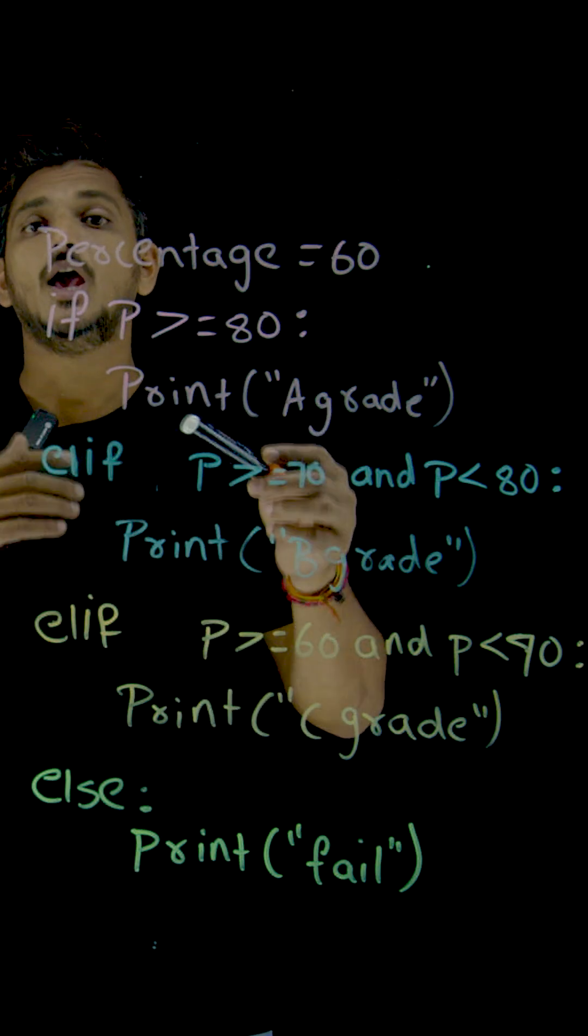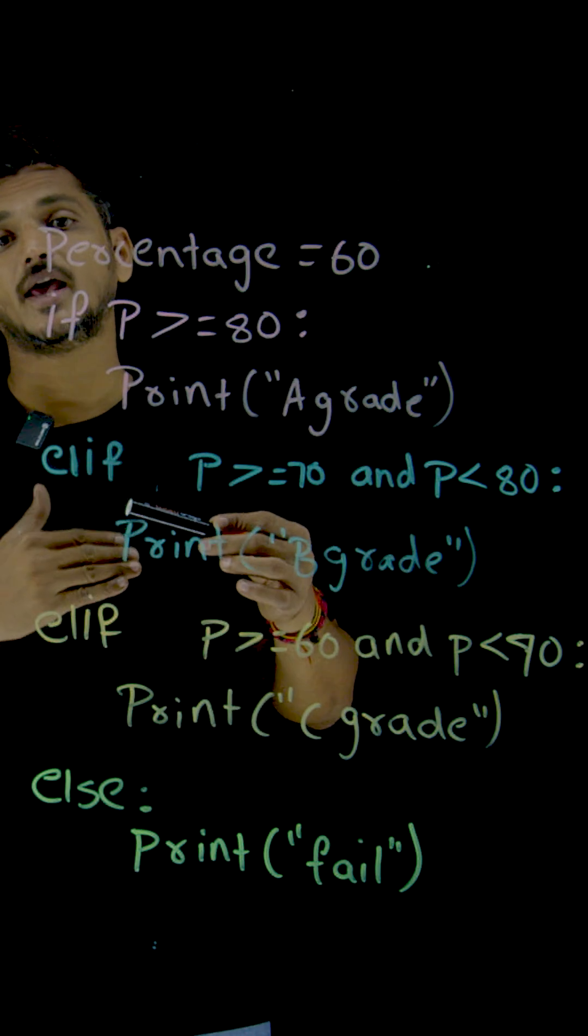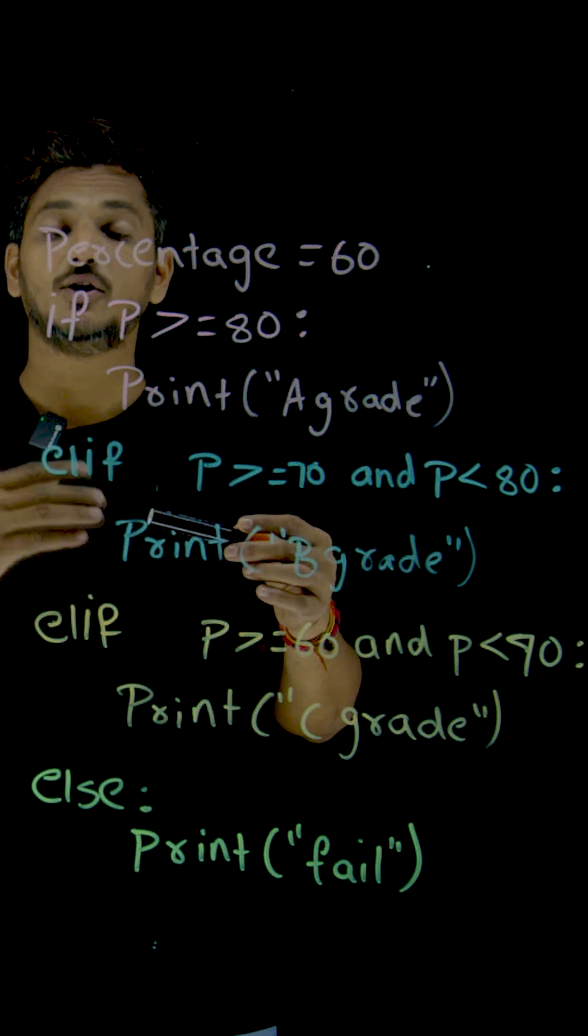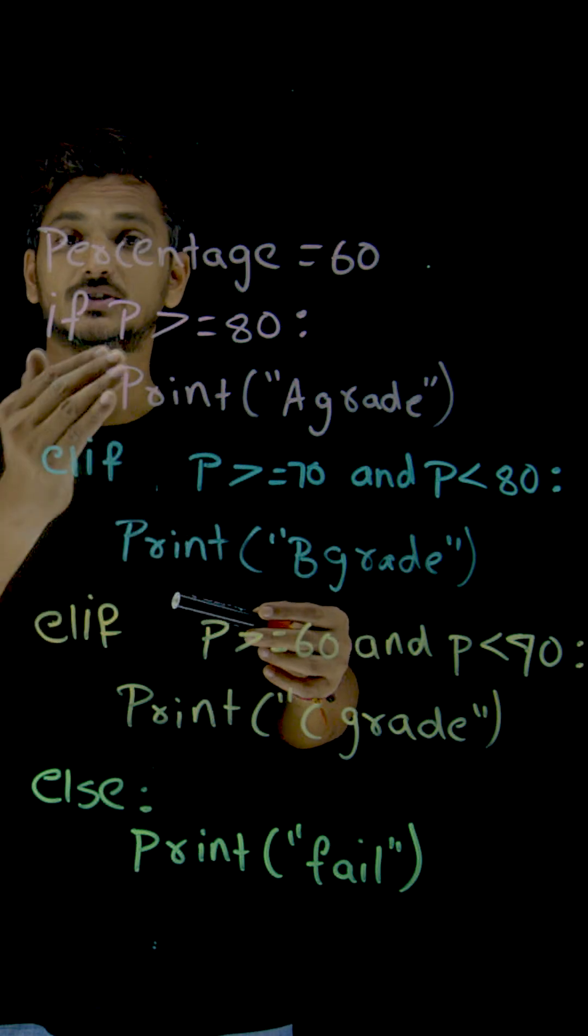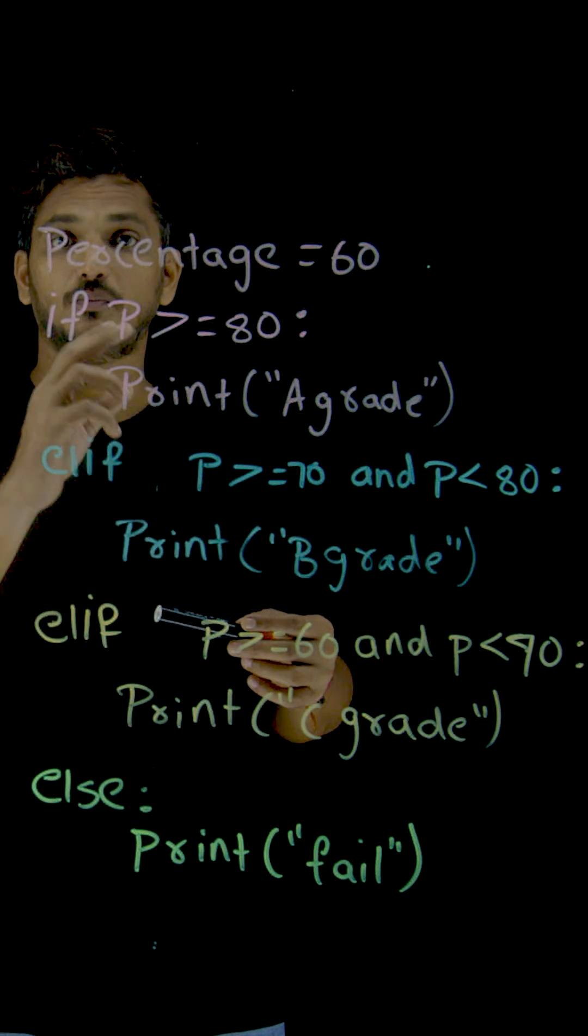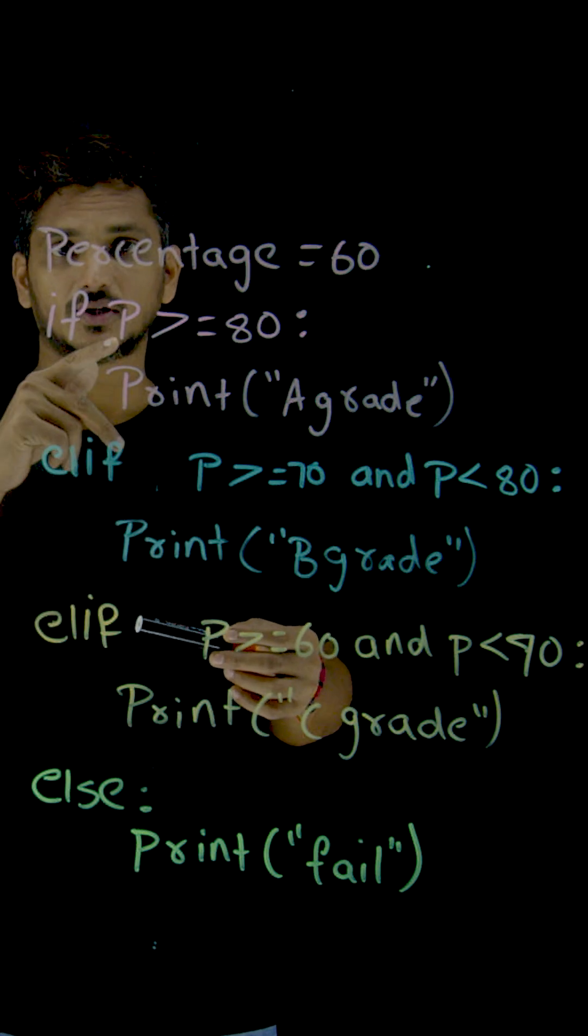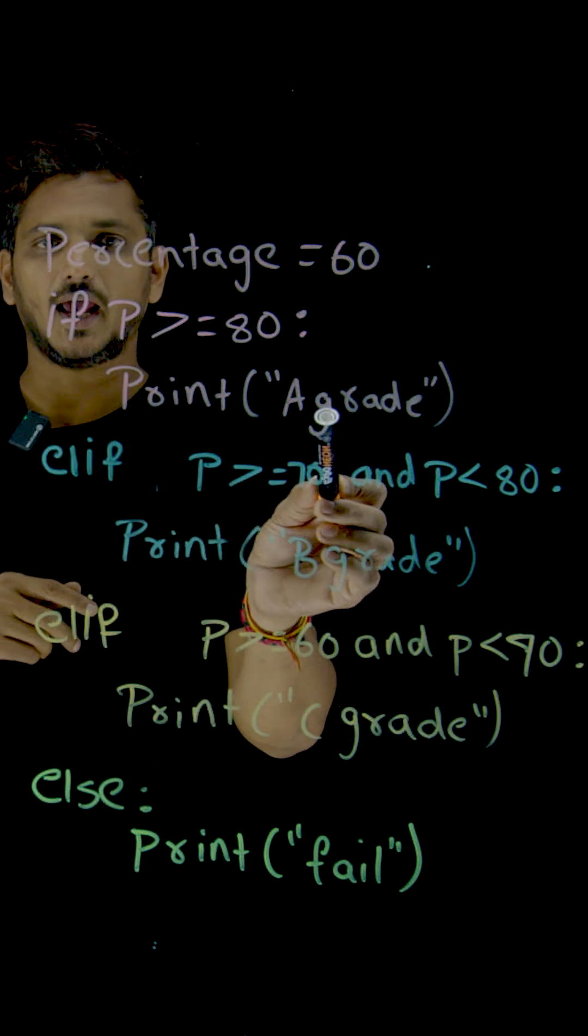Here we have written only one line. You can write any number of lines in the body of the if. And you can write any statements - again you can write if else inside this. Based on that, you have to think about the logic. So, print A grade.